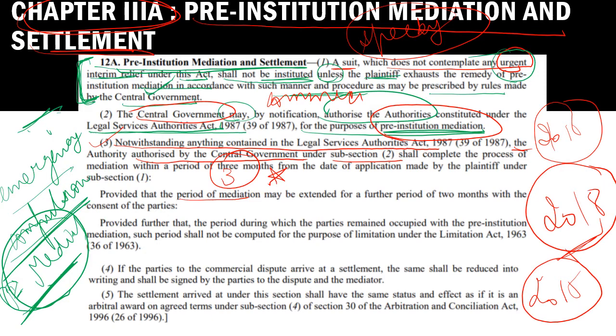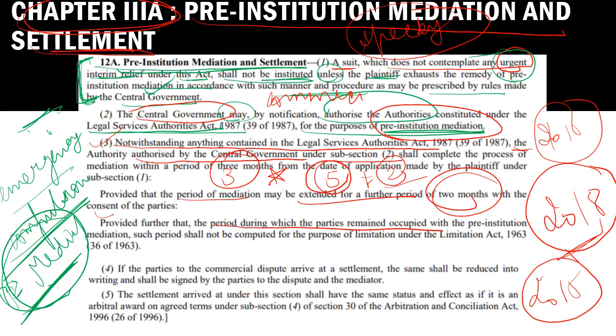If the parties wish to continue mediation beyond 3 months — even if the case is not resolved — they can get an extension of 2 more months. So the maximum period, which may be asked in the exam, is 5 months: 3 months as given in this Act, plus 2 months extension. The reason must be justified and both parties' consent is required. Furthermore, the period during which parties remain occupied with pre-institution mediation shall not be computed for the purpose of limitation under the Limitation Act 1963.